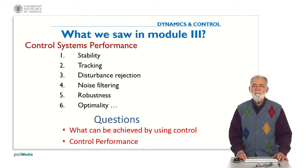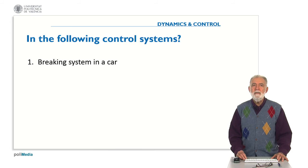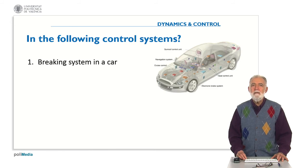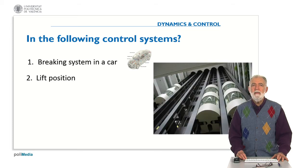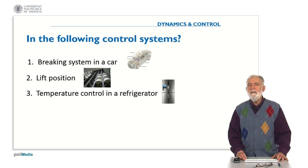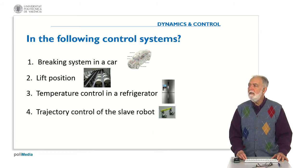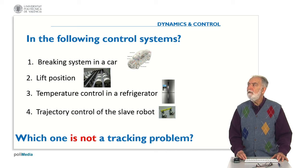In the previous question we analyzed different control systems to see if they are regulation or tracking systems. Now, considering the following control systems again: the braking system in a car, the lift position controlling the lift position, the temperature control in a refrigerator, or the trajectory control of a slave robot — the question is: which one of these four control systems is not a tracking problem?